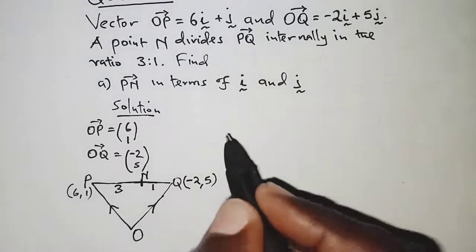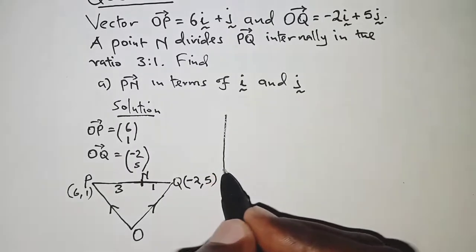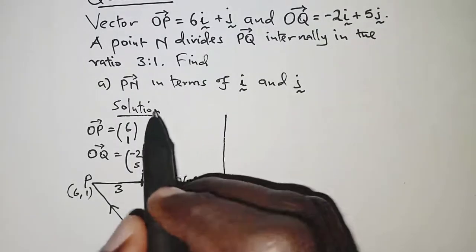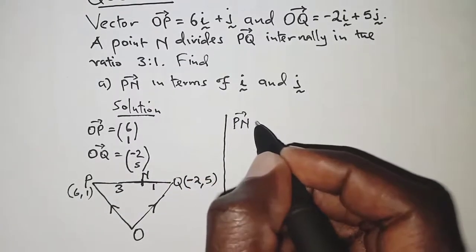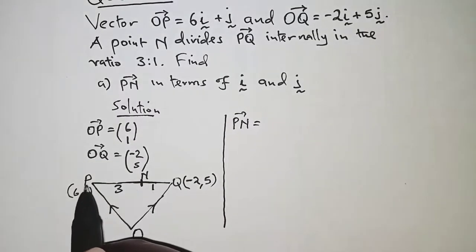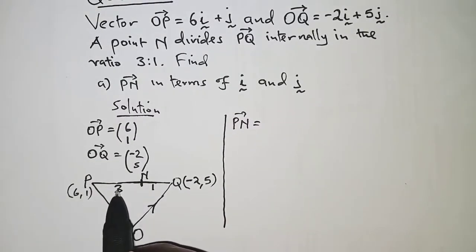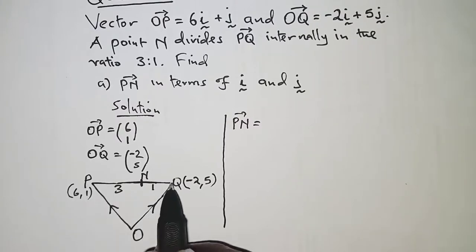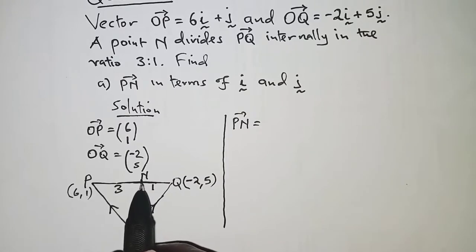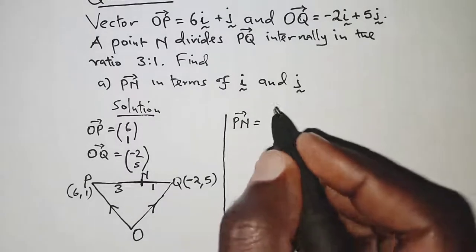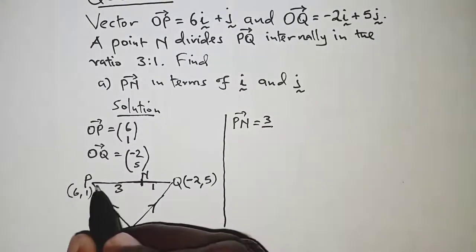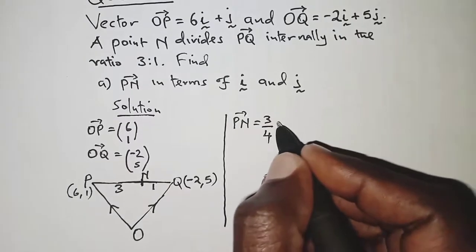So from there, we can now proceed to determine PN as we are asked in the question. So PN simply means we have PN which is 3 units of the total PQ, which we've been given as 3 plus a unit there, so that is 4. So PQ is 4, PN is 3 parts, so we're simply going to have PN as a fraction of PQ, and that is 3 out of total 4 of PQ.